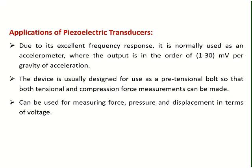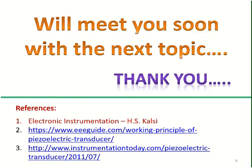Due to its excellent frequency response, the piezoelectric transducer is normally used as an accelerometer, where the output is of the order of 1 to 30 millivolts per gravity of acceleration. The device is usually designed for use as a pre-tensional bolt so that both tensional and compression force measurements can be easily done. Piezoelectric transducers can also be used for measuring force, pressure, and displacement in terms of voltages.